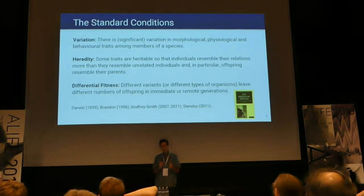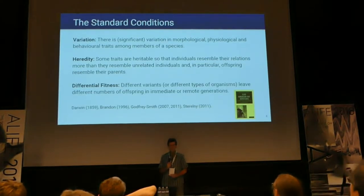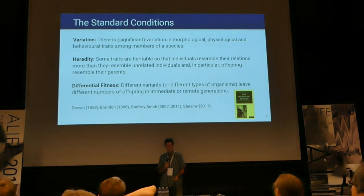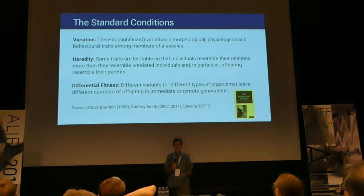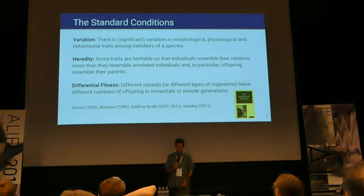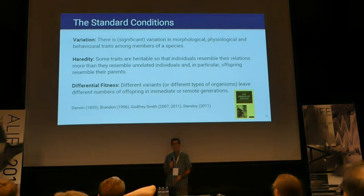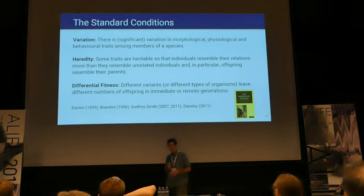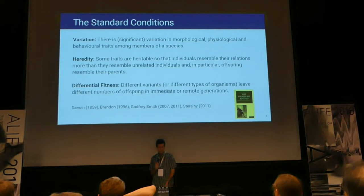The standard three conditions for evolution are: variation — variation in individuals; heredity — some traits are inherited and passed on to the next generation; and differential fitness — there's selection of some organisms that, because of whatever variations they have, pass on their traits to the next generation.